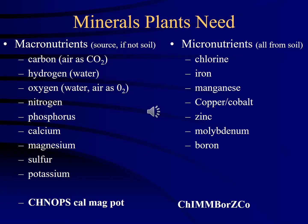Here is a list of macronutrients — the nutrients that plants need in large amounts — and micronutrients. The macronutrients listed at the top, carbon, hydrogen, and oxygen, are things the plant gets pretty much on its own. It's not something we focus on in fertilizers. The plant can get carbon dioxide from the air, water from the soil, and oxygen from water and the atmosphere.